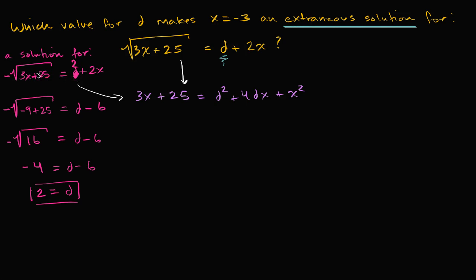So if d equals two, then x equals negative three is a solution to the negative equation, which means it's an extraneous solution for the original equation. We can verify this: with d equal to two, plug in x equals negative three into the original. The left-hand side gives the square root of 16, which is positive four. The right-hand side gives two minus six, which is negative four. Those don't match, so x equals negative three is not a solution to the original — confirming that d equals two makes x equals negative three an extraneous solution.